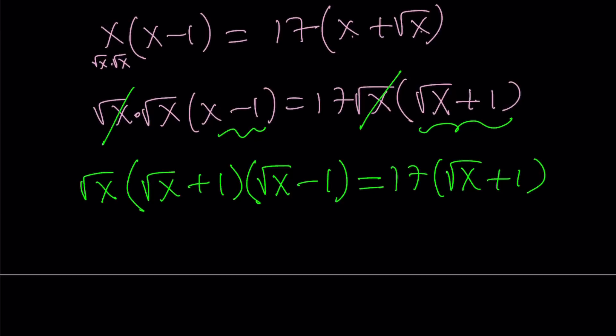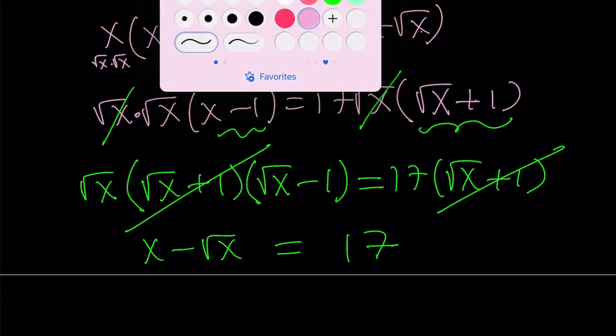Square root of x plus 1 cannot equal 0 because if x is real, then square root of x plus 1 is always going to be positive. Therefore, we can also divide both sides by that. And that gives us something real cool because if you distribute, you're going to get x minus square root of x. And on the right-hand side, you're going to get 17, which is what the answer is.